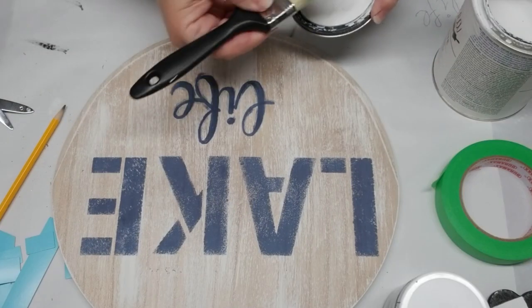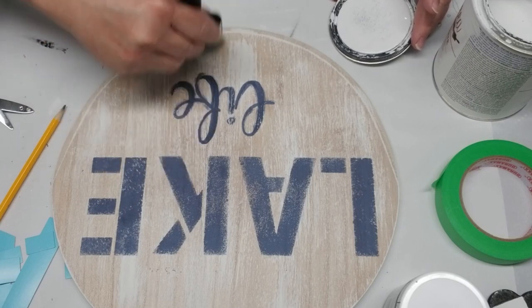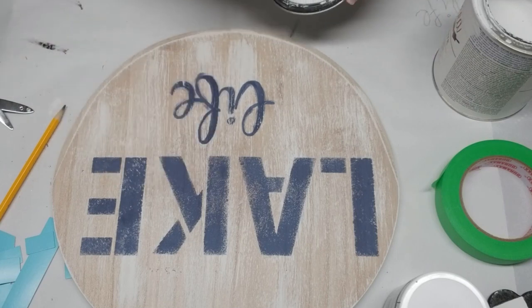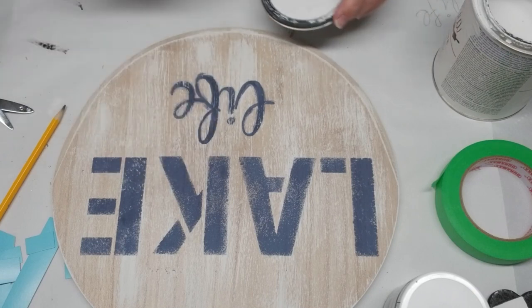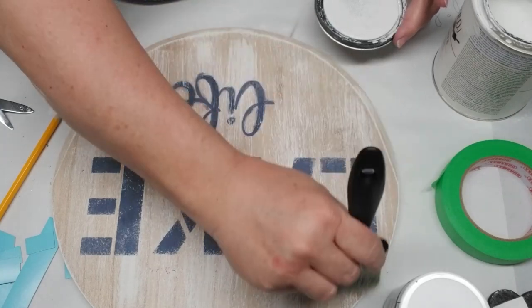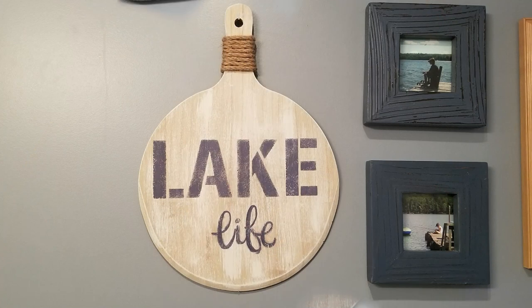The last couple things that I did to the word 'life' is I just roughed up the edges a little bit with the paintbrush. I kind of blended them out a little bit, dry brushed around the edges, and now I'm taking some of the Rust-Oleum chalk paint in Linen White just to give them more of a look and feel like the word 'lake.'